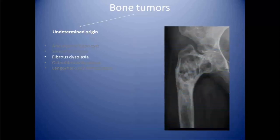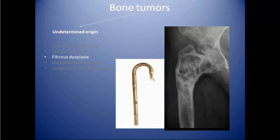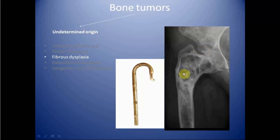Next is fibrous dysplasia, which is a non-neoplastic tumor-like congenital condition in which bone is replaced by fibrous stroma. It can be monoostotic or polyostotic. It can cause bending of the bone — as in this case where the femur is bent, known as shepherd's crook deformity. It can also affect bones of the skull and face, and patients can present with pain. It is mostly seen in children and young adults and leads to bone expansion and remodeling.